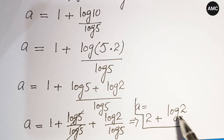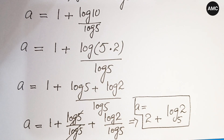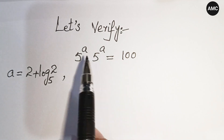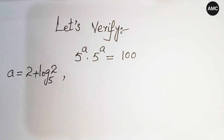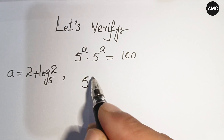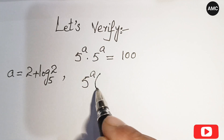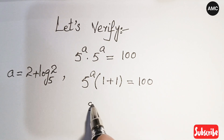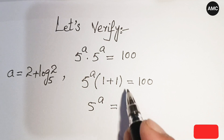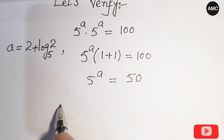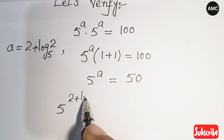Now we are going to verify our answer. Our problem is 5 to the power a plus 5 to the power a equals 100, where a equals 2 plus log 2 to base 5. Factoring out 5 to the power a gives 5^a times 2 equals 100, so 5 to the power a equals 50. Substituting our value of a, we have 5 to the power (2 plus log 2 to base 5) — is this equal to 50?